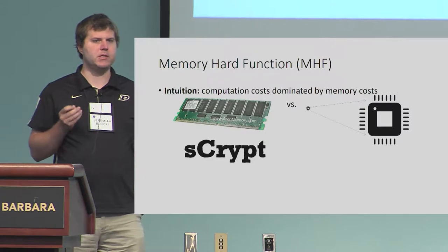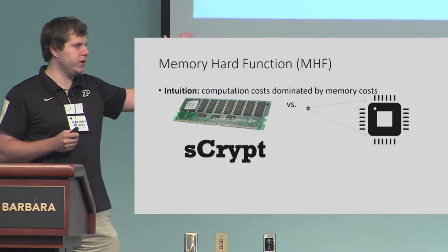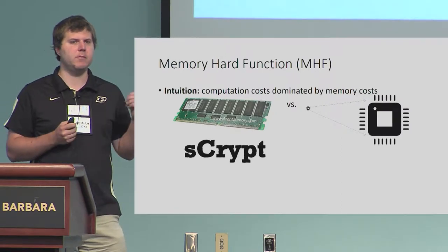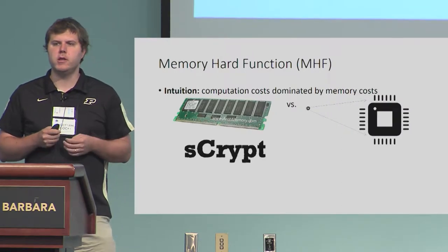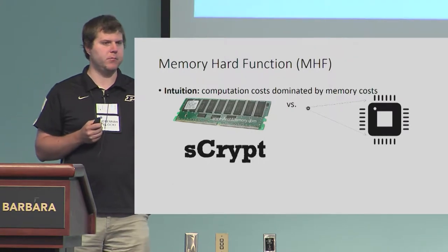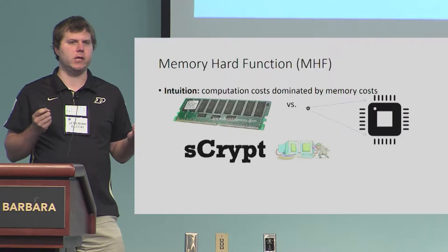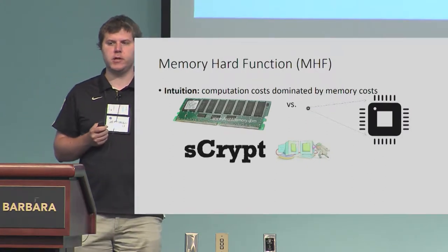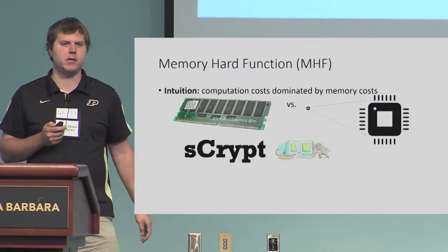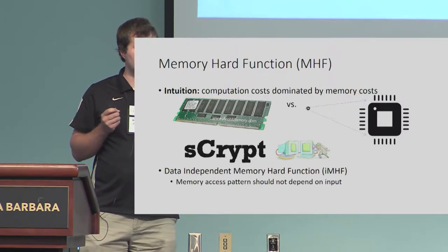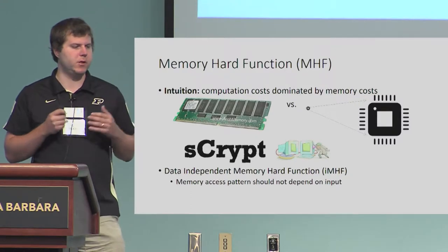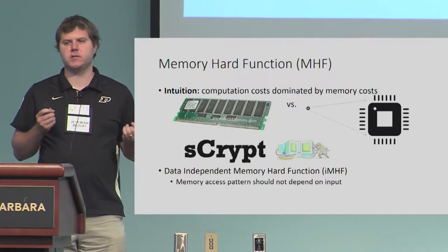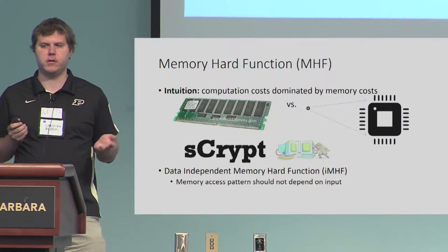We have a couple examples of memory-hard functions. S-crypt is a prime example — it's an example of a data-dependent memory-hard function. The memory access pattern here depends on the user's input, so we have to worry about side-channel leakage. A side-channel might leak information about the user's input, which in this case might be a sensitive password. In this talk, we're going to focus entirely on something called data-independent memory-hard functions — memory-hard functions whose memory access pattern does not leak any information about the user's input.